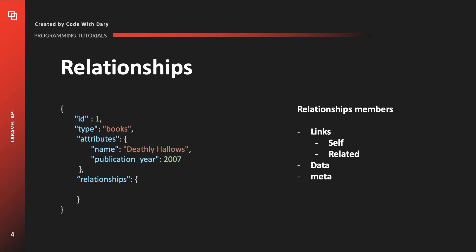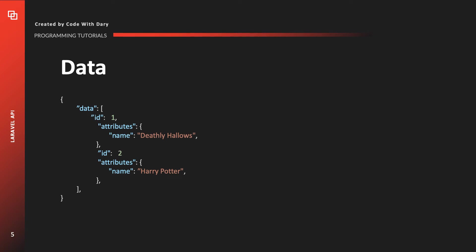The required members are: the link — with self and related — the data, and the meta. The link member has two types: self, which links the relationship to itself, and related, which links the relationship between resources. The data member is called the resource linkage — instead of holding resource objects, it holds resource identifier objects. The meta is an object containing non-standard meta information about the relationship. We could also pass in data, which gives us either a resource identifier object or a collection of resources. In our case, we're getting back a collection of books, and as you can see on our screen, we have two books.